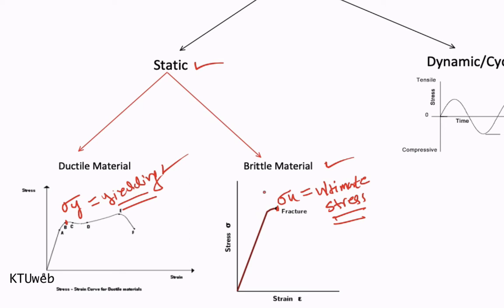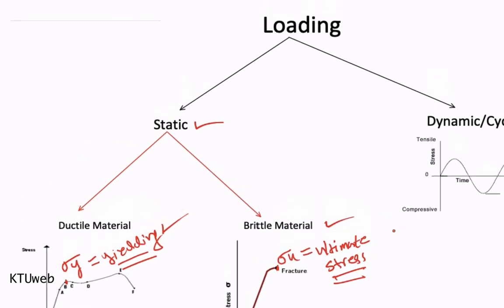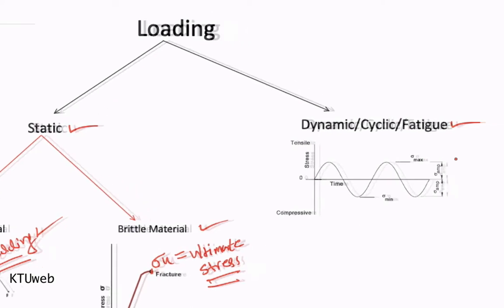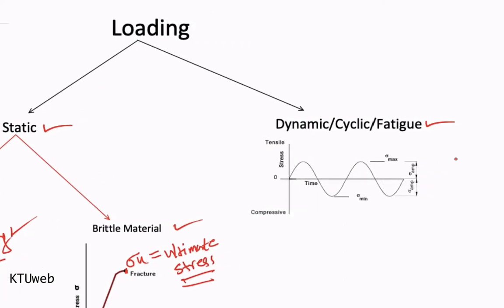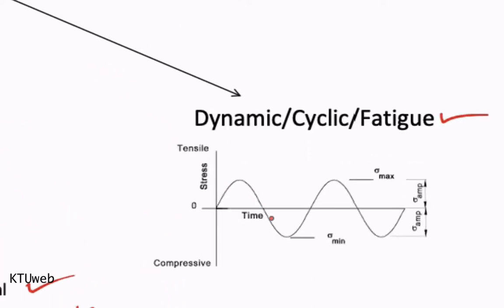So these are the two pieces of information we need when designing under static load — either yield stress for ductile or ultimate stress for brittle material. But in certain situations these two limiting factors will not be enough, because in certain loading conditions a material will fail below its yield point. That situation is what we call the dynamic loading situation. Dynamic or cyclic means the load is not constant with respect to time.